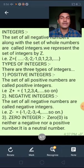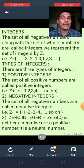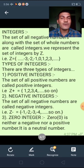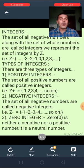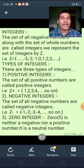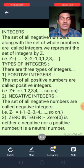Now, next is integers. The set of all negative numbers along with the set of whole numbers are called integers. We represent the set of integers by capital Z. There are three types of integers. First is positive integers — the set of all positive numbers are called positive integers. Next is negative integers — the set of all negative numbers are called negative integers.